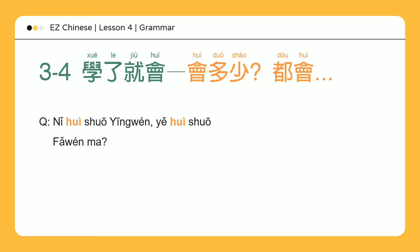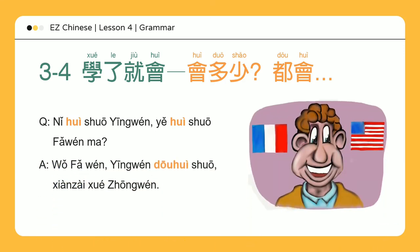你会说英文?也会说法文吗? — You know how to speak English. Do you know how to speak French too? 我法文、英文都会说，现在学中文 — I can speak both French and English, and now I'm learning Mandarin.